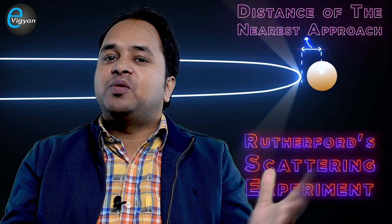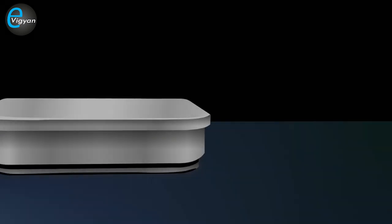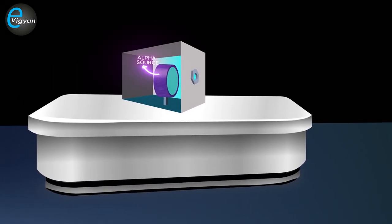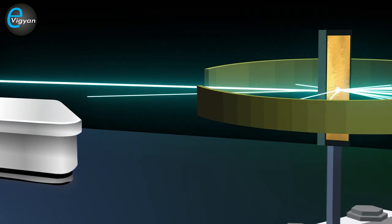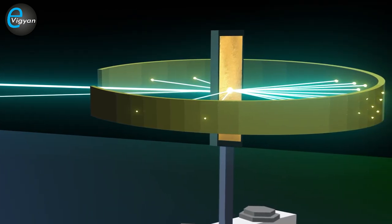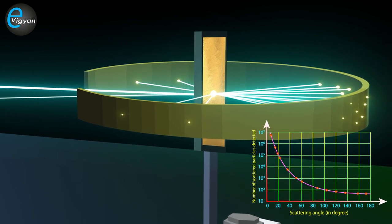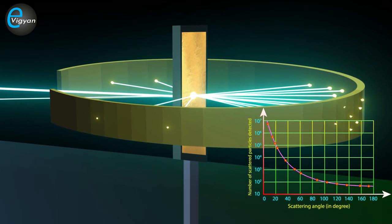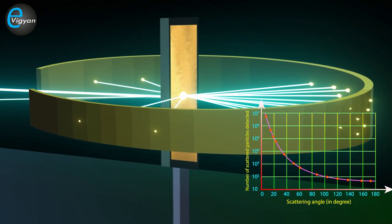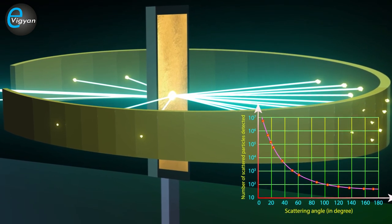In the Rutherford scattering experiment, Geiger and Marsden used a narrow beam of energetic alpha particles directed onto a thin gold foil of thickness around 4 micrometers. Scattered alpha particles were recorded on a zinc sulfide screen placed at some distance around the gold foil. They observed that most of the alpha particles — around 98 to 99% — were deflected at a very small angle near 0 degrees. Some were deflected at different angles from 0 to 180 degrees, and very few were reflected back along their path.